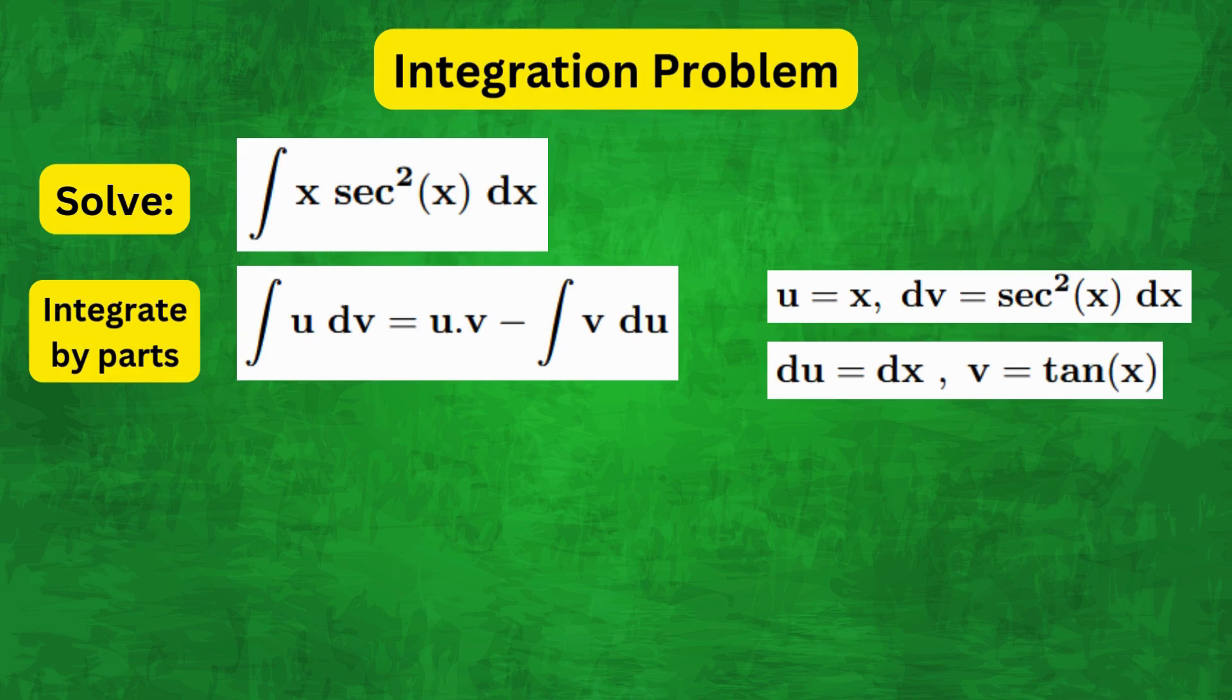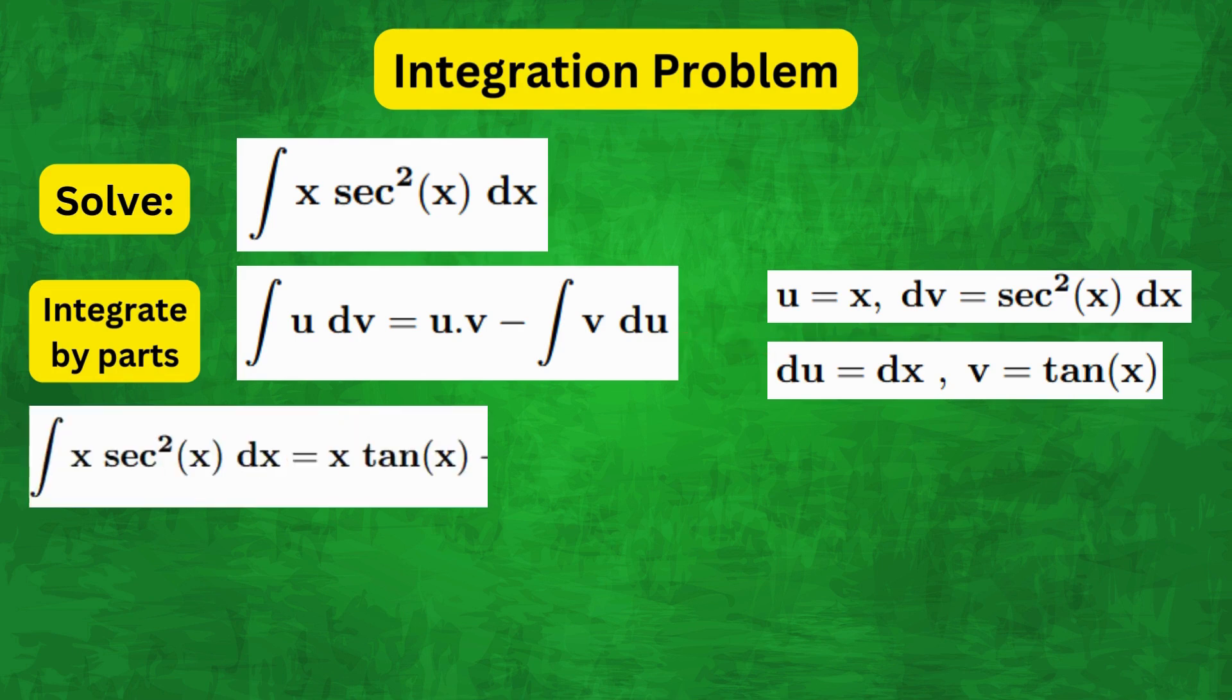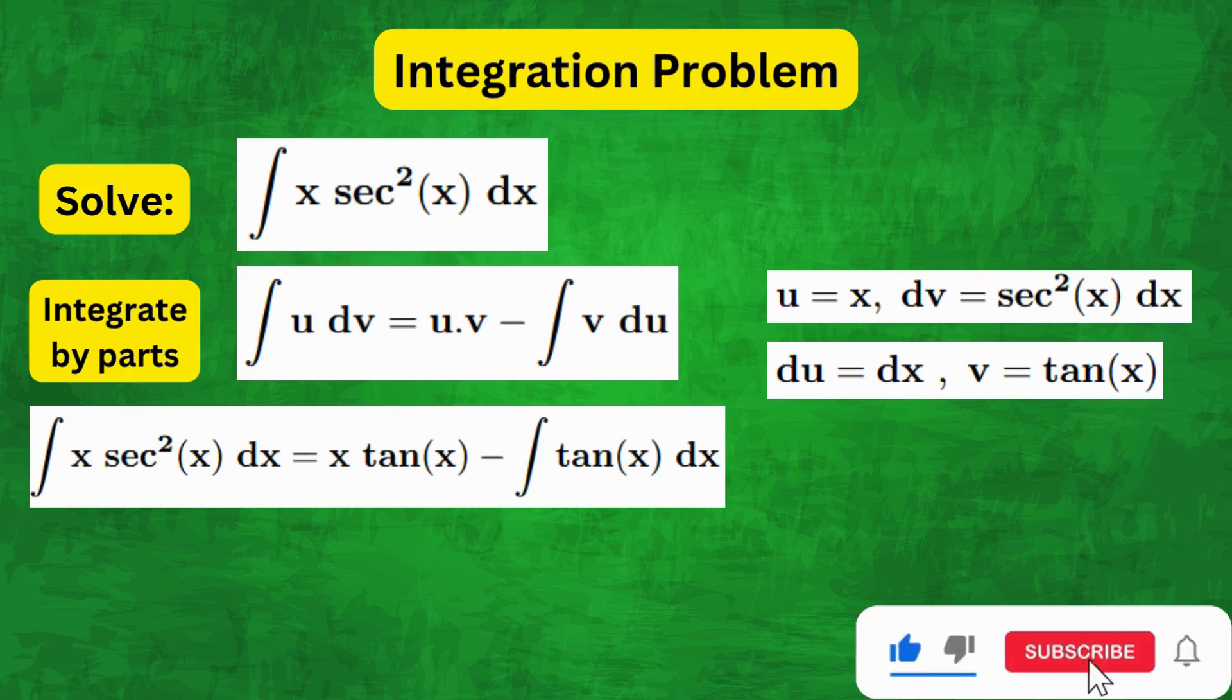So now we've got all the components here and we can substitute them into the formula. So we end up with ∫x sec²(x) dx = x tan(x) - ∫tan(x) dx.